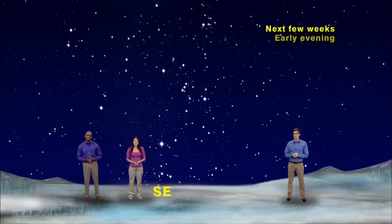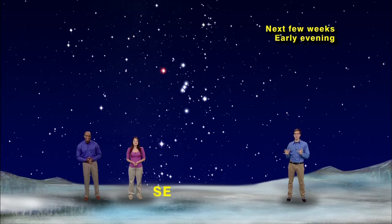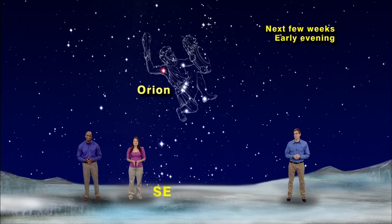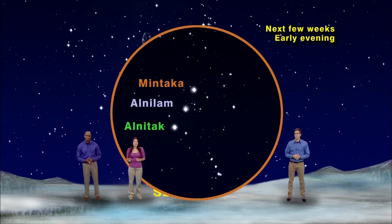Our skies are set up for any night over the next few weeks during early evening. And in the southeast, you'll see what has to be the second most familiar pattern of stars, after the Big Dipper that is, a pattern which is loaded with bright stars known as Orion the Hunter. To find him, look for his belt, which is simply three evenly spaced stars in a row. These are the stars Alnitak, Alnilam, and Mintaka.